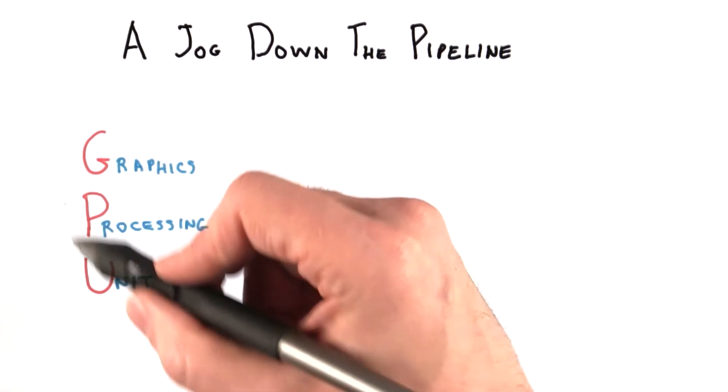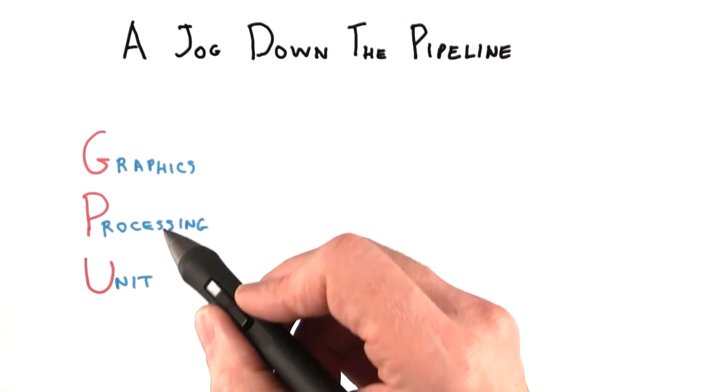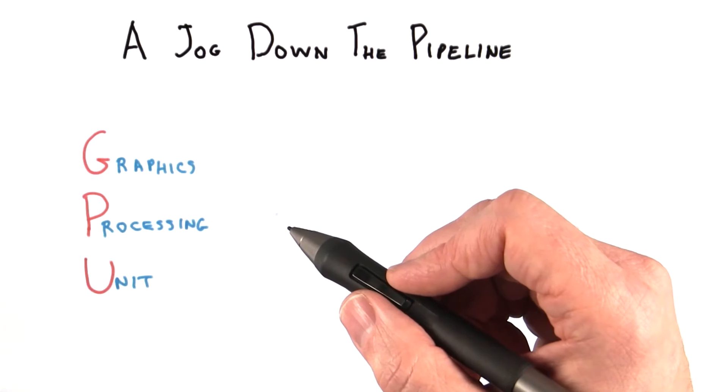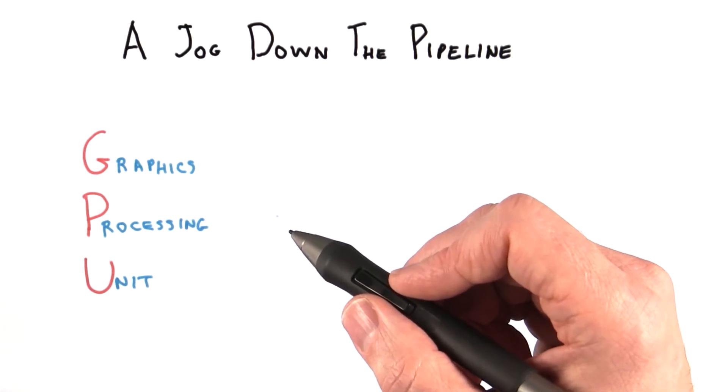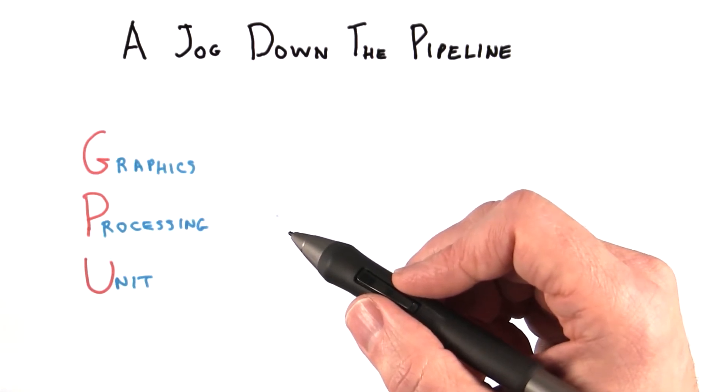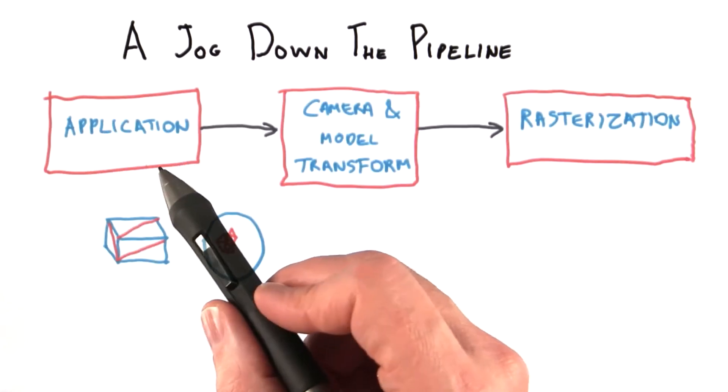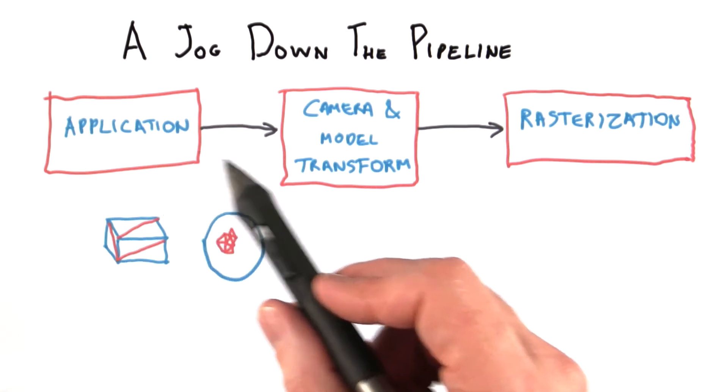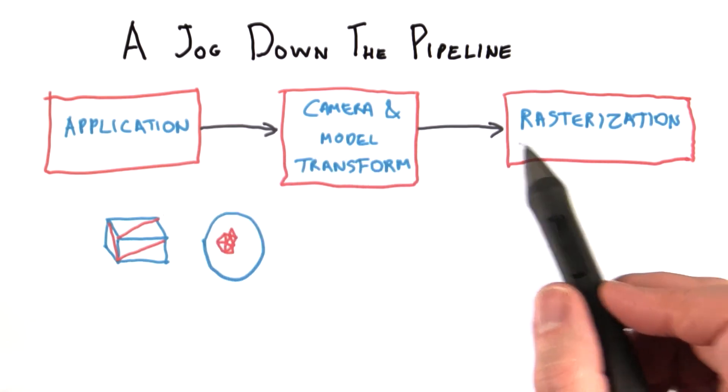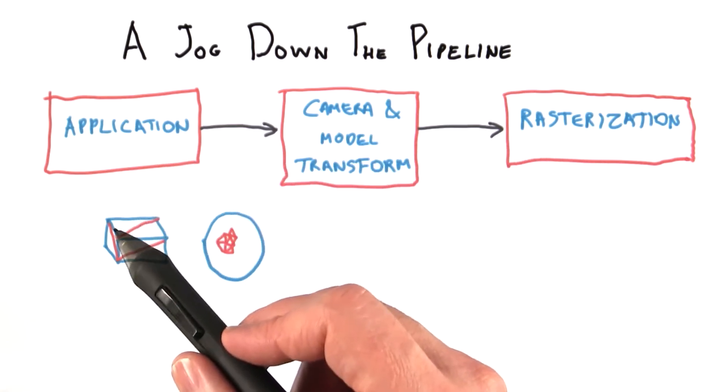This graphics hardware is usually called the GPU for Graphics Processing Unit. A GPU uses a rendering process called rasterization, or scan conversion, which is optimized to use the simplifications I've outlined. Let's look at one rendering pipeline from end to end. The idea of a pipeline is to treat each object separately.